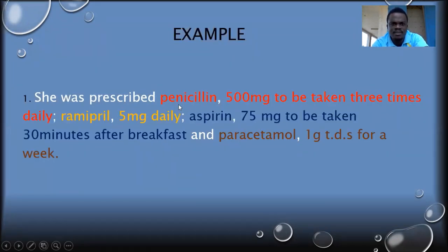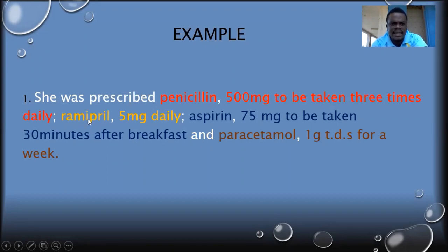So this is just to make it clearer. The one in red is penicillin, in orange is ramipril, then aspirin, and then paracetamol. You can see how I use a comma to separate each prescription name from its dosage, and how I use a semicolon to separate one prescription from another.